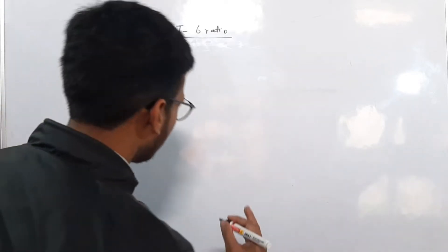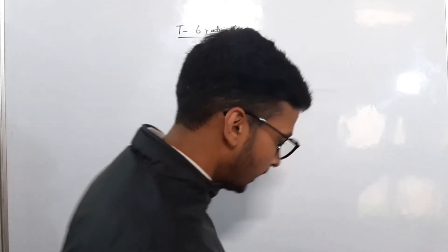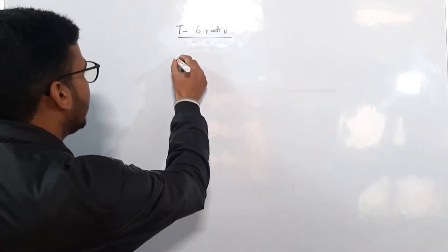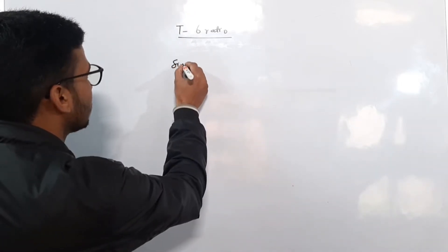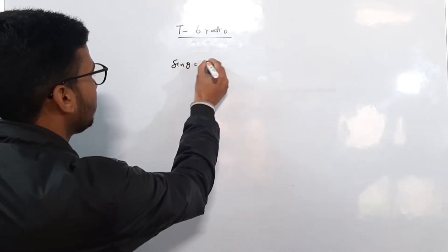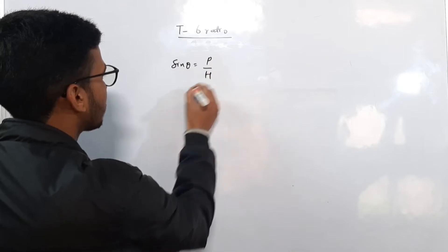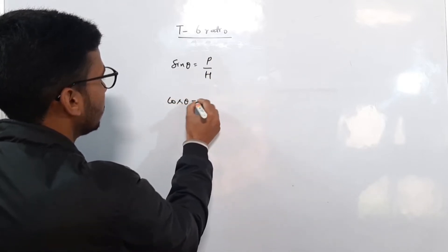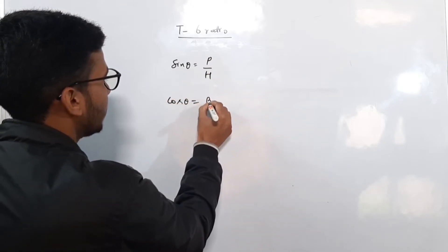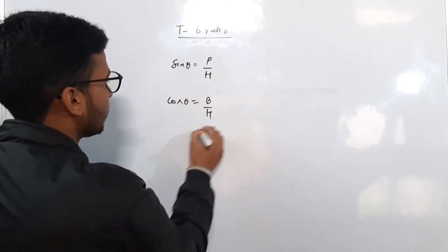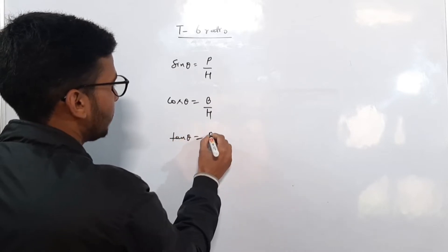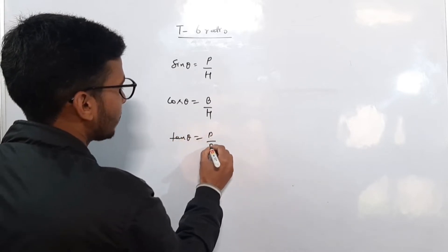We have already covered this in the Term 1 exam. The trigonometric ratios are: sin theta equals perpendicular by hypotenuse, cos theta equals base by hypotenuse, and tan theta equals perpendicular by base.